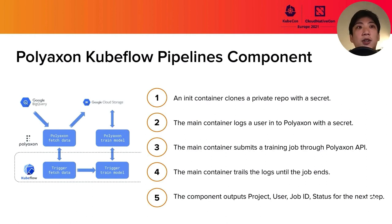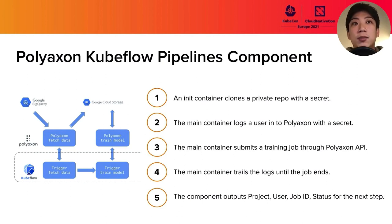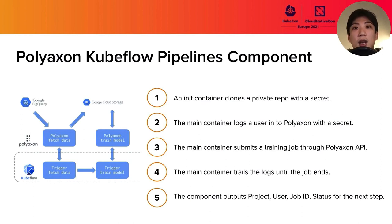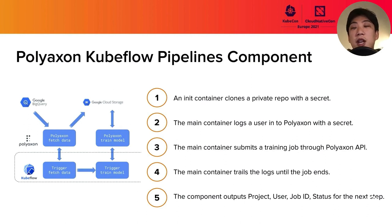The third thing is the PolyAxon-Kubeflow Pipeline Component. Here are the steps showing how it works. At the first phase, an init container clones a private repository using a secret that stores a GitHub token. Then the main container logs in to PolyAxon using a secret that stores the PolyAxon token. In the third step, the main container submits the job to PolyAxon through the PolyAxon API. The main container then tails the logs until the job ends, and finally passes the results of the job and output data to the next step.